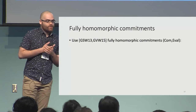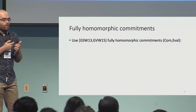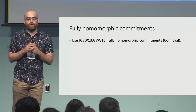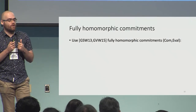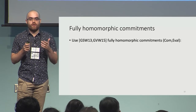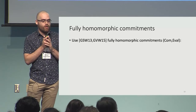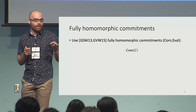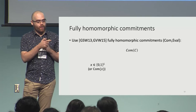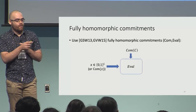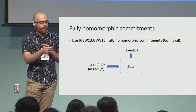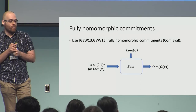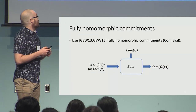Our construction makes heavy use of fully homomorphic commitments, in particular the fully homomorphic commitments of Gorbunov, Vaikuntanathan, and Wee, based on the fully homomorphic encryption scheme of Gentry, Sahai, and Waters. These commitments have homomorphic capabilities. We use a commit algorithm and an eval algorithm: given a commitment to a circuit C and a commitment to a string x, the eval algorithm homomorphically evaluates a commitment to C(x), very similar to fully homomorphic encryption but in the context of commitments.